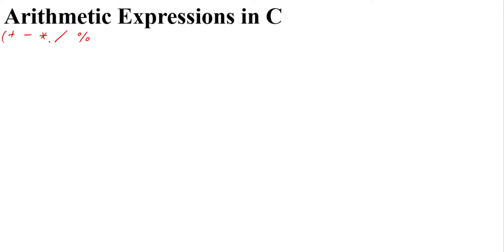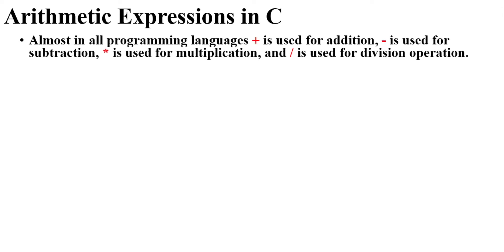Now let us talk about arithmetic expressions in C. Arithmetic expressions are related to addition, subtraction, multiplication, division, and modulus. Almost all programming languages — C, C++, Java, and others — use the same notation: plus for addition, minus for subtraction, star (*) for multiplication, and slash (/) for division.